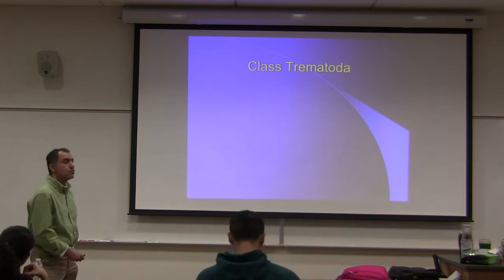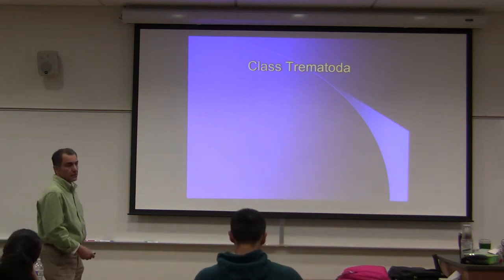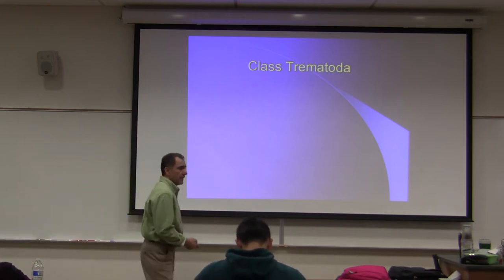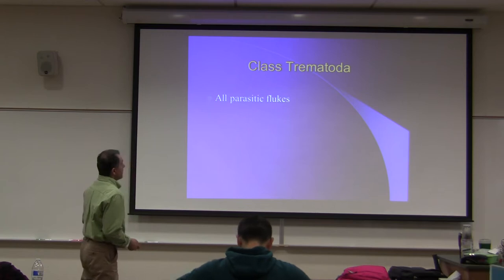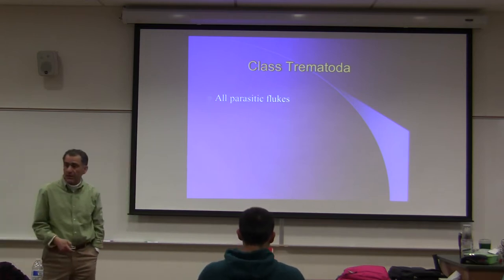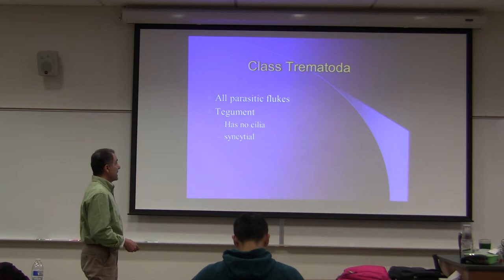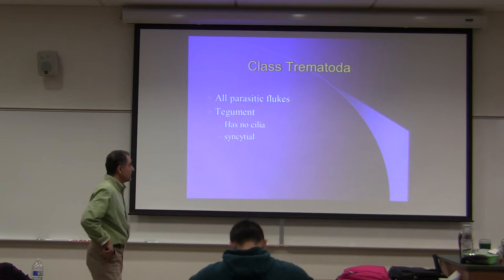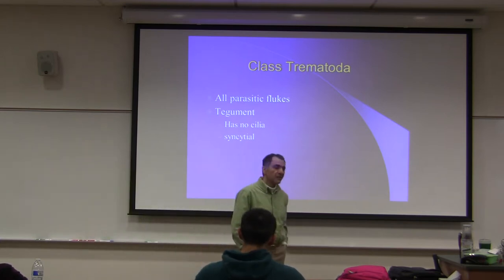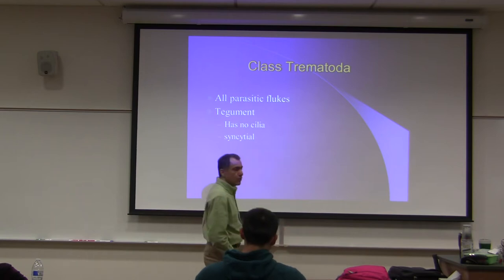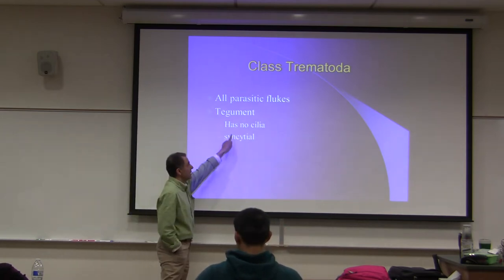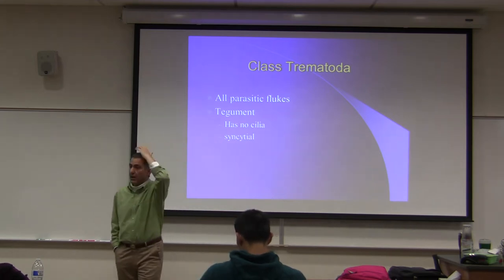Trematodes - the common name for them is flukes. They are the flukes in animal kingdom. They're all parasitic; all members of this class are parasitic. They have a tegument, which is unusual for the animal kingdom. They have syncytial cells, and they have no cilia.